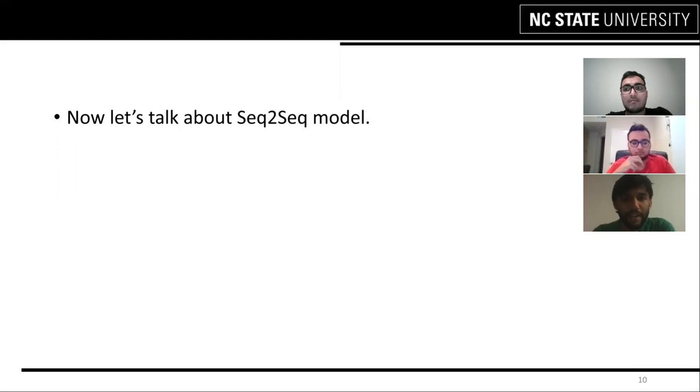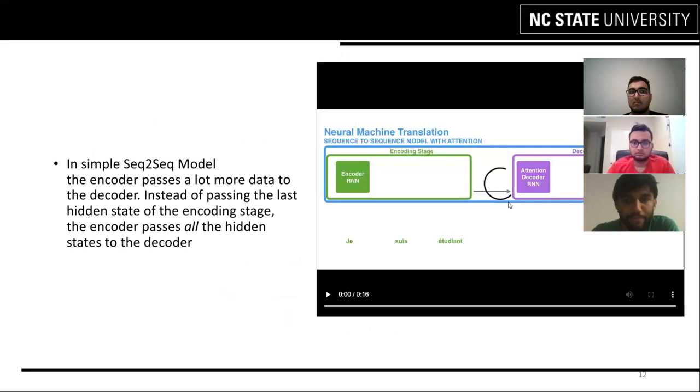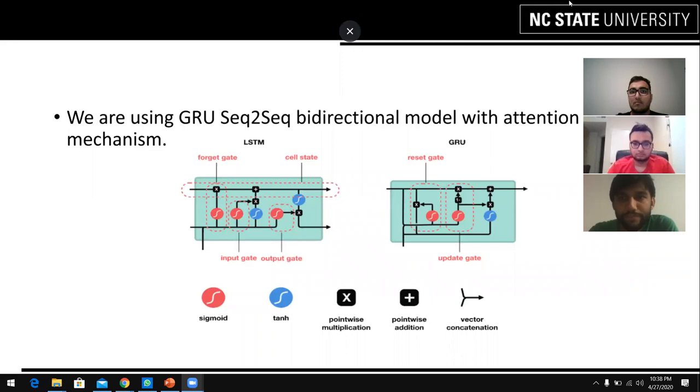Now let's talk about our main model which is the advanced sequence to sequence model which we will be using over our baseline LSTM model. We are going to use a GRU based sequence to sequence bi-directional model with attention mechanism. The basic difference between GRU and LSTM is that GRU consists only of reset-gate and update-gate unlike LSTM which has three gates. Due to its simplicity in structure, it is computationally effective over LSTM.